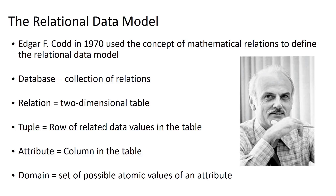In the relational data model, we talk about databases, which are collections of relations; relations, which are tables made up of two dimensions — rows and columns; tuples, which are rows of related data values in the table; attributes, which are columns in the table; and domains, which are sets of possible atomic values for an attribute. We're going to go into more depth on each of these terms in the coming slides.